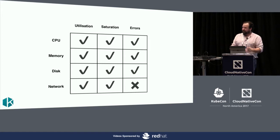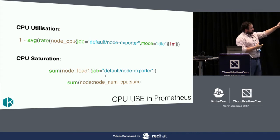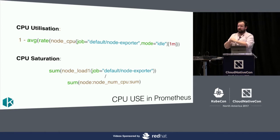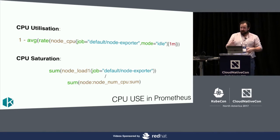So diving into the real stuff — how would you do this with Prometheus? CPU utilization: one of the reasons I love Prometheus is because the queries fit on a single page. This is using the node exporter, which is a Prometheus exporter you run on every machine. If you're using Kubernetes, you use a daemon set. For each CPU in the machine, you ask how much time was it idle for, take that as a percentage of the total time, and subtract it from one. Super easy.